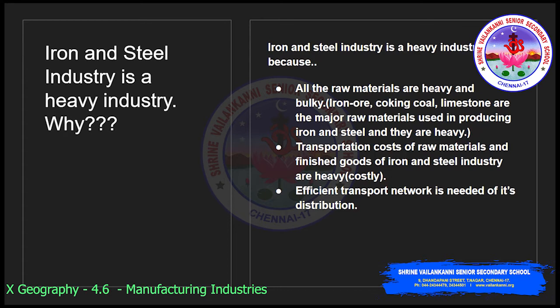Why is the iron and steel industry a heavy industry? All the raw materials — iron ore, coking coal, and limestone — are heavy and bulky. They are added in the ratio of 4:2:1. The transportation cost of raw materials and finished goods is heavy and costly, and an efficient transport network is needed for their distribution.